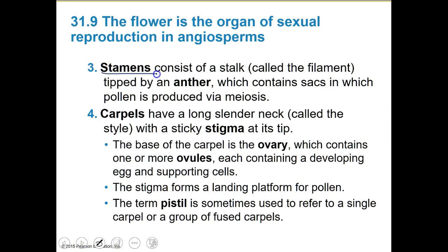Three is the stamens. The stamens is the male part — because of the 'men' in it. It consists of a stalk which we call the filament, and then the anther on top of it. It contains sacs which produce pollen. So this is where our pollen is produced.